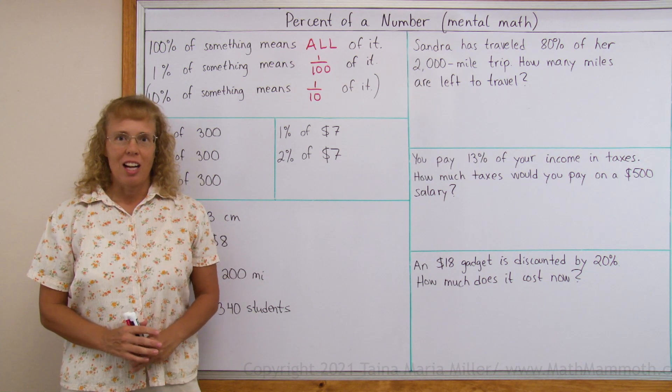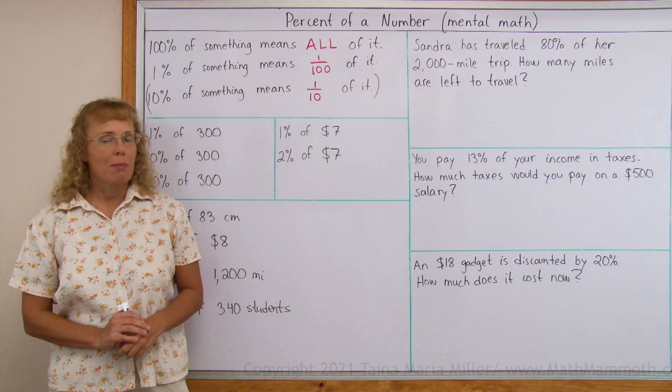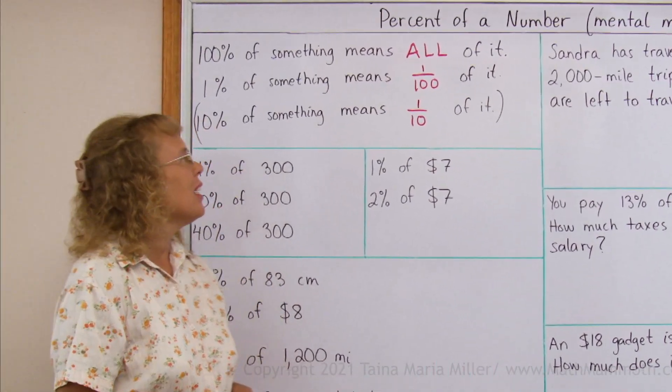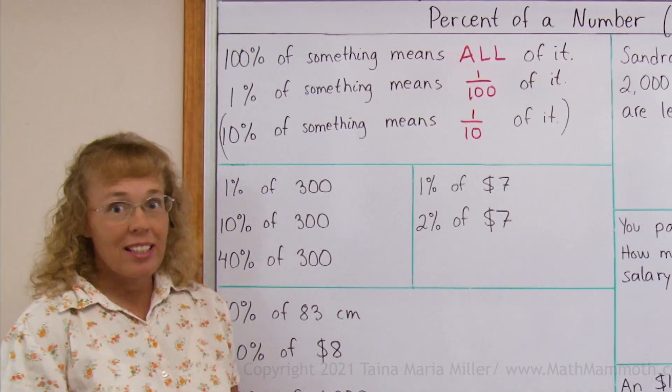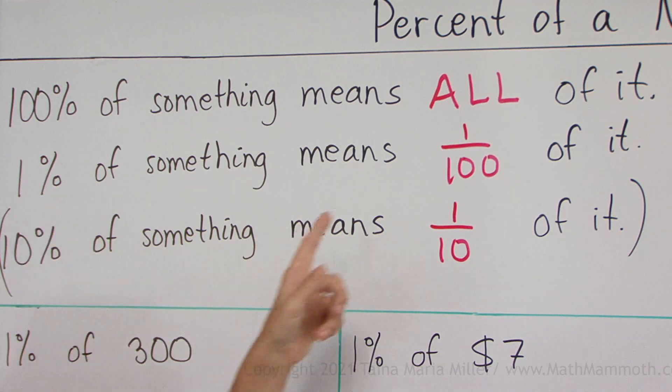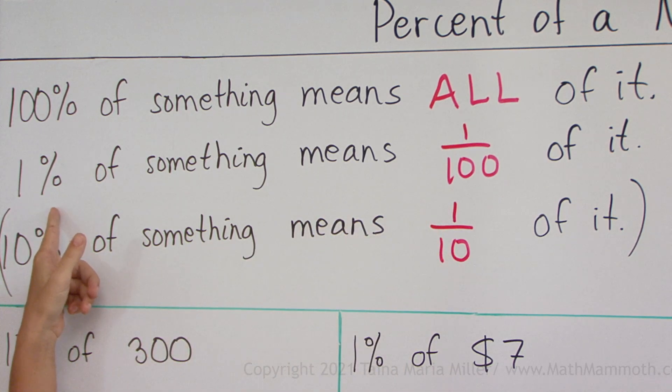In this lesson we're going to learn how to calculate a percent of a number using mental math or percentages of quantities. It is all based on these basic ideas. One hundred percent of something means all of it. One percent of something means one hundredth of it. Because percent means per hundred means divide by hundred.